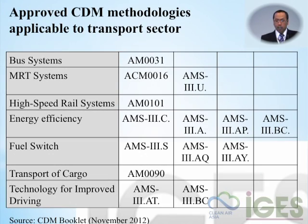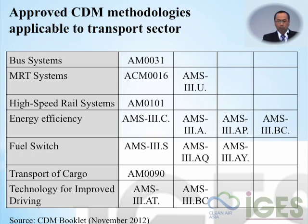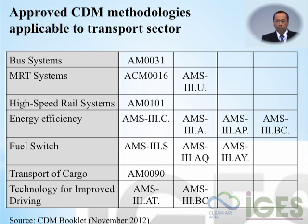There are several approved CDM methodologies applicable for the transport sector. These include bus systems, especially Bus Rapid Transport and MRT systems which also include cable car under AMS3, as well as high-speed railway systems for intercity transport, energy efficiency, fuel switching, transport cargo, and technology improvement for driving.